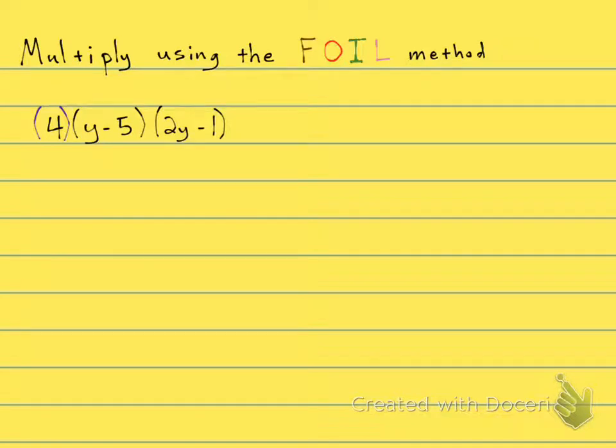FOIL stands for first two, outer two, inner two, and then the last two. First two: it's y times 2y. That is going to give me 2y squared.